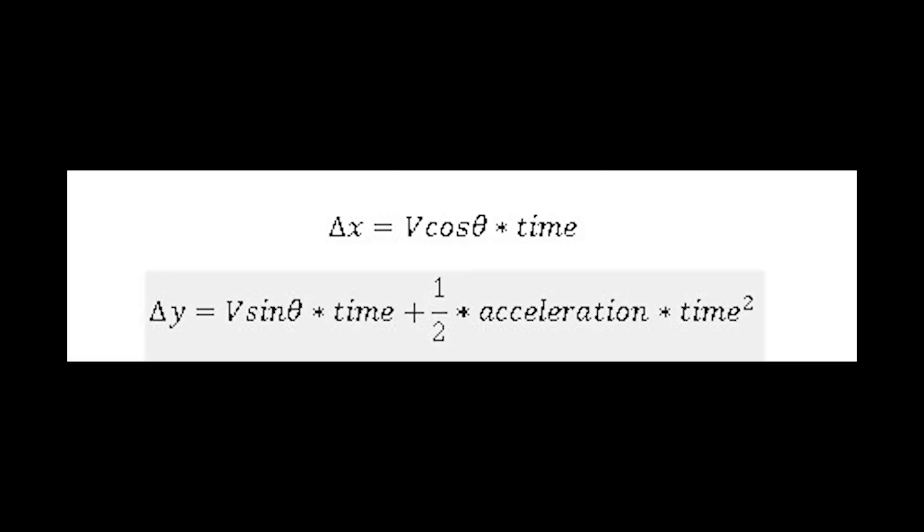Let's start with part A. The only equations necessary from the standard gamut of projectile motion equations are Δx = v cos θ × t and Δy = v sin θ × t + ½ a t².